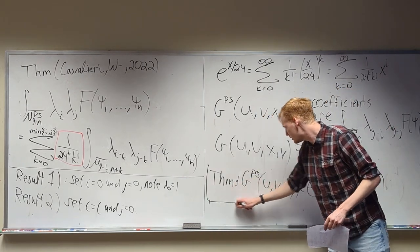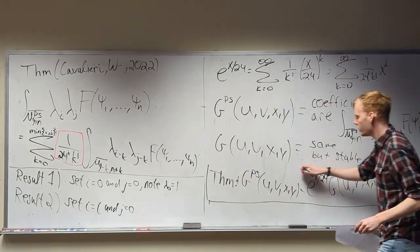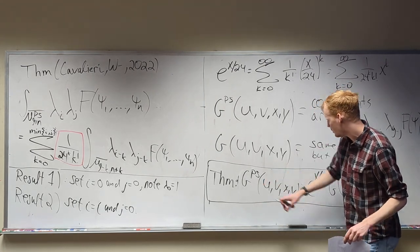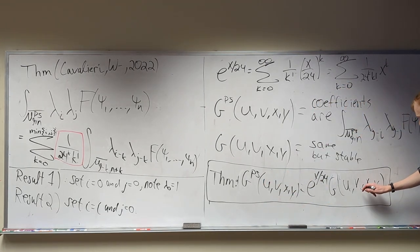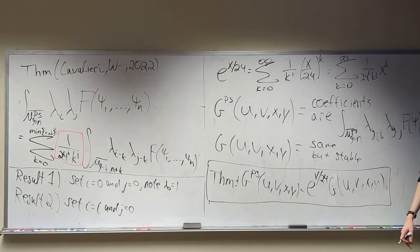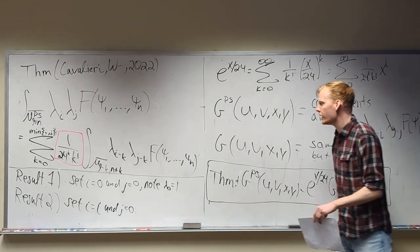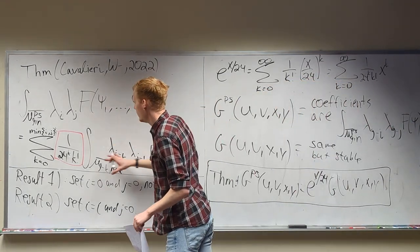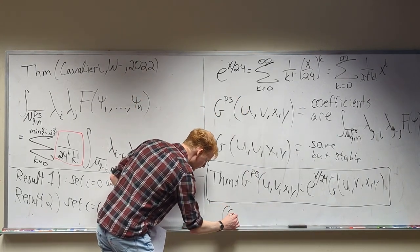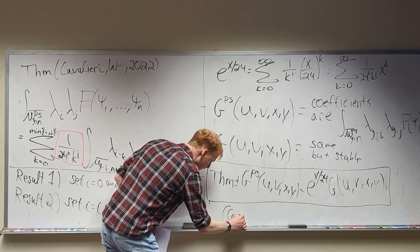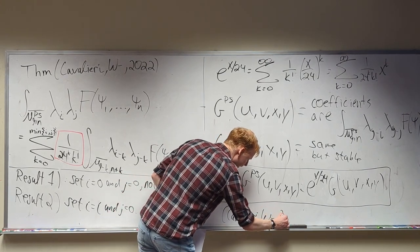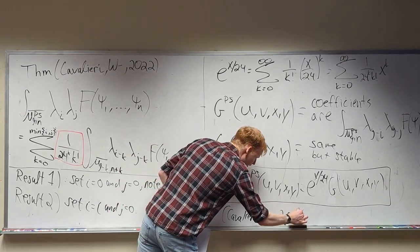This is pretty cool: the generating function for pseudo-stable Hodge integrals and the stable Hodge integrals only differ by a factor of e^{x/24}. It's a really nice way of packaging this information. This was another theorem by Renzo and myself, coming out any day now.